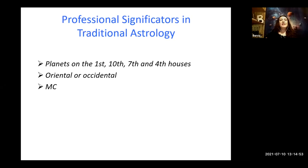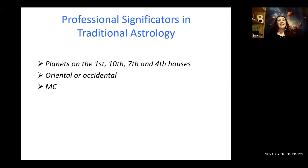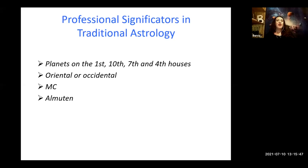Now we can analyze the MC. When it comes to analyzing the MC, there are different methods and calculations. I will not go deeper into every rule here because it takes a lot of time to explain, but I will just summarize. Schoener has a couple of rules: look at the 10th house, look at the ruler of the 10th house, check if the ruler makes any aspects to the MC, check Mercury, Venus, and Mars, and check the almutens of possible significators of profession.